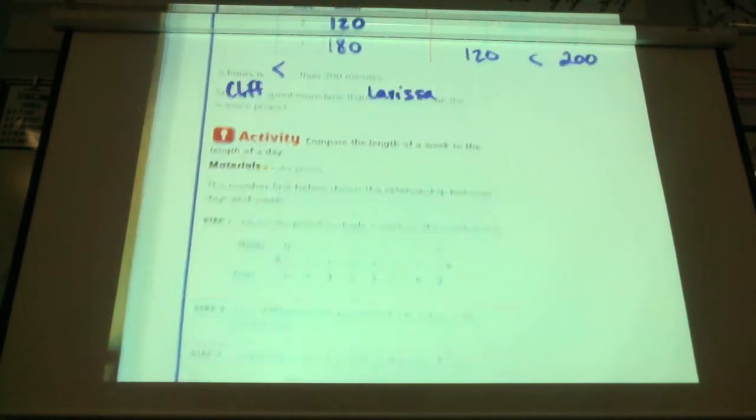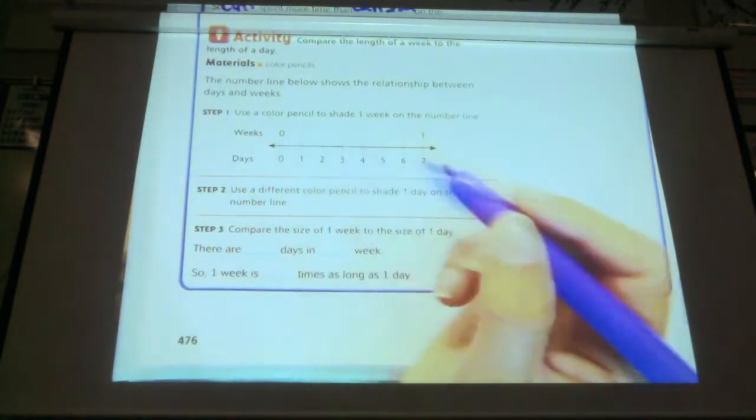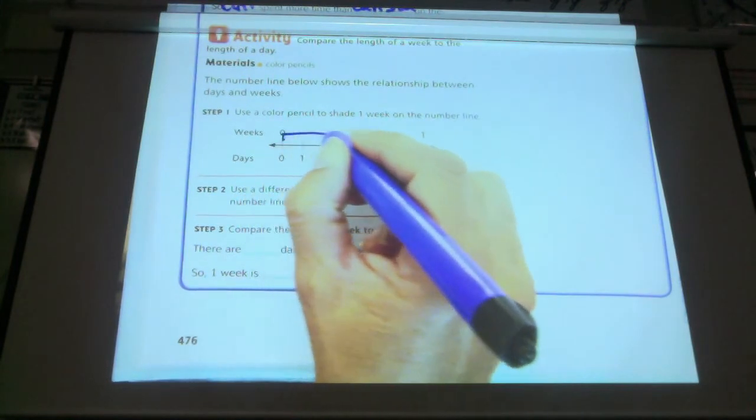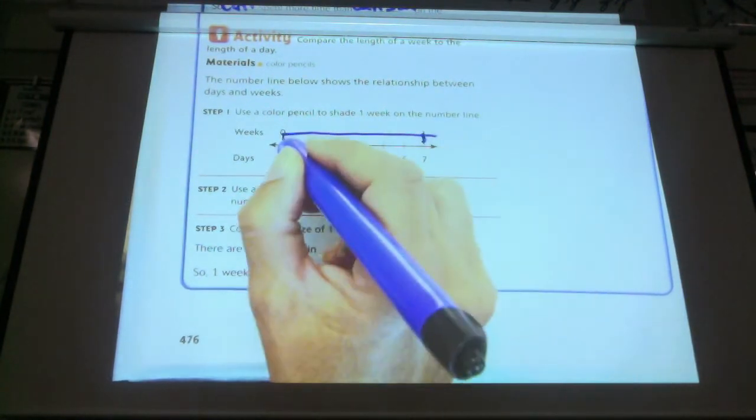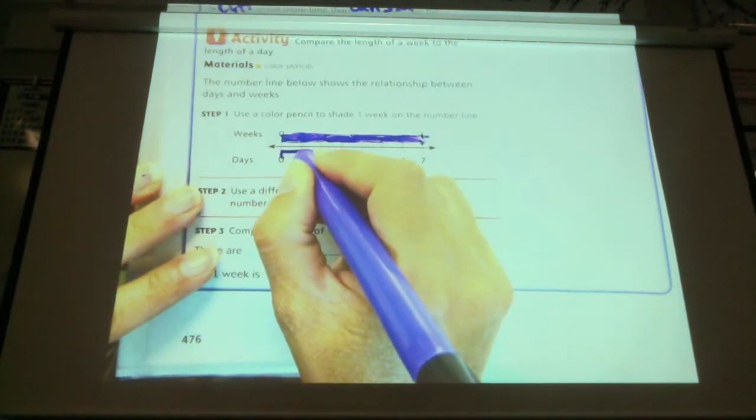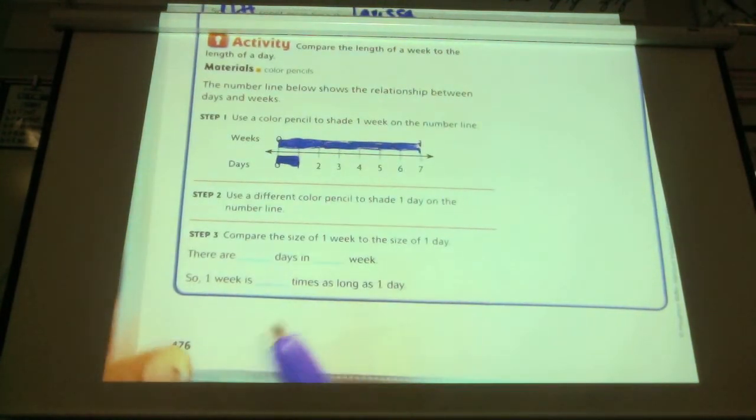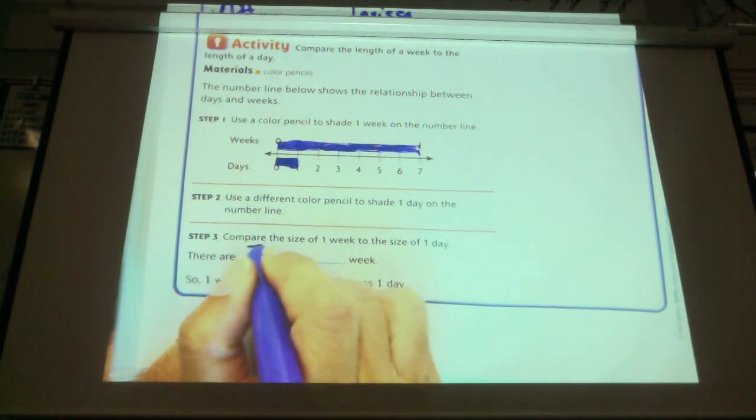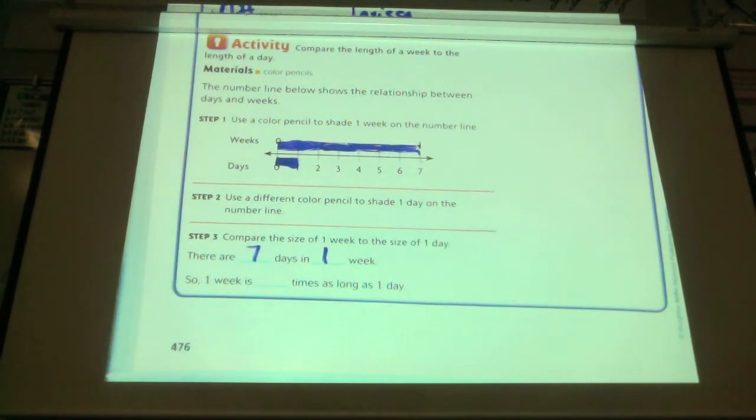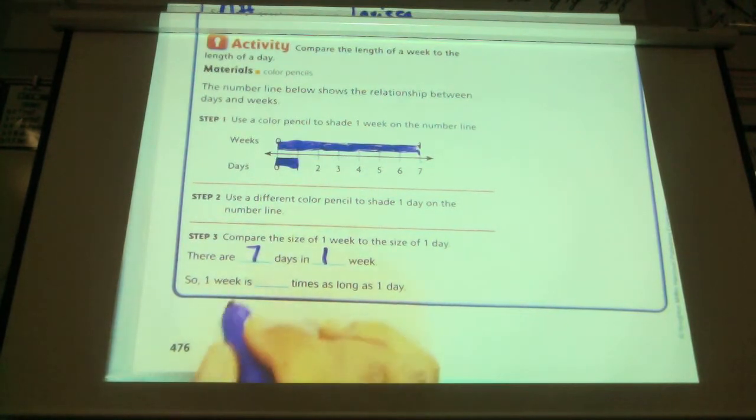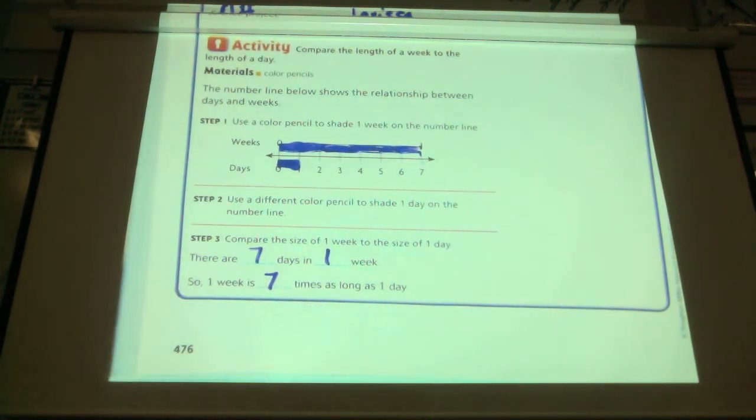Compare the length of a week to the length of a day. A week. You can use your pencil to shade this. Shade one day. So, there are how many days in a week? Seven. Seven days in one week. We had this problem in our warm-up this morning. So, one week is seven times as long as one day.